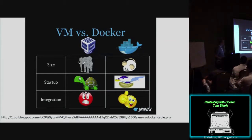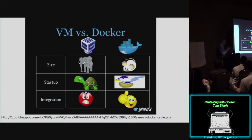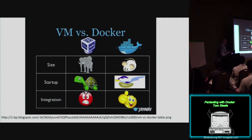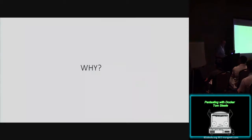VMs are typically very large, whereas a Docker container is going to be very small. The startup time of a VM is slower because you're starting up the OS. Whereas with a container, your kernel's already there so you just need to load it. Integration with VMs — sharing file system volumes and things like that can be painful. Has anyone ever tried to share a volume to a VM running on Ubuntu with VMware? Does it work all the time? Port forwarding you can do in VMs, but you're configuring it through a UI — it's not very programmable.